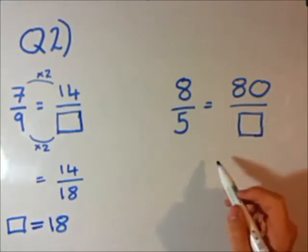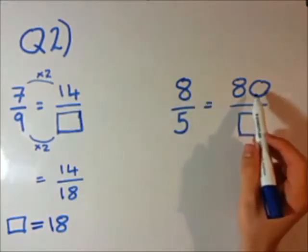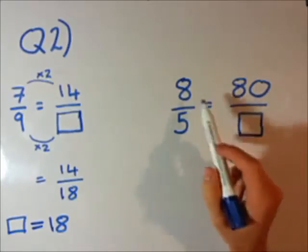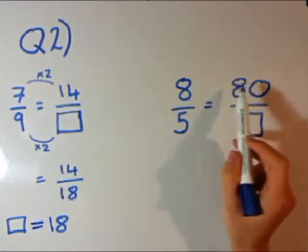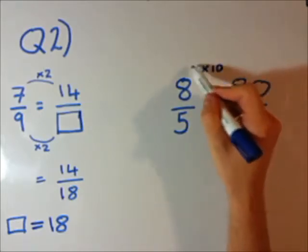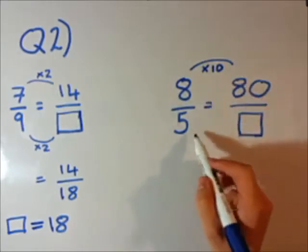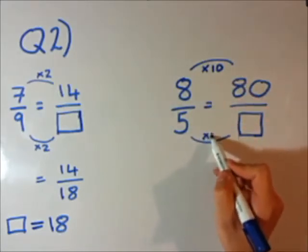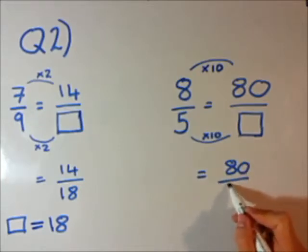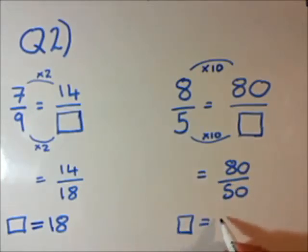Let's have a go at the second one. You've got 8 over 5 equals 80 over the box. So how did 8 turn into 80? Well, 8 times 10 is 80. So whatever we do on the top, we also do on the bottom. Times this by 10 will equal 80 over 50. So our answer equals 50.